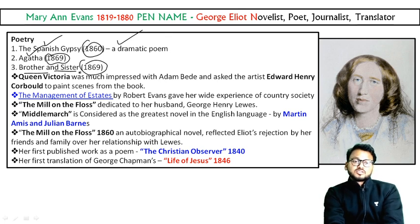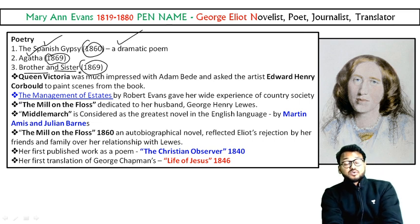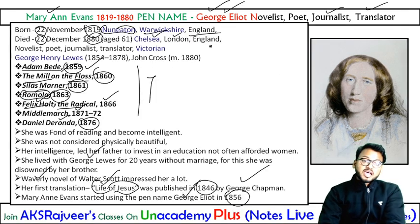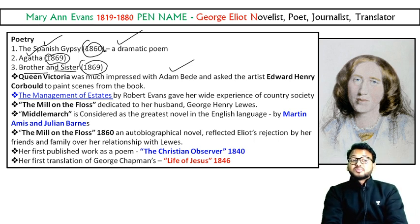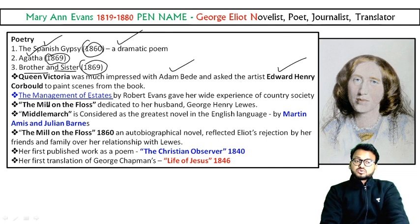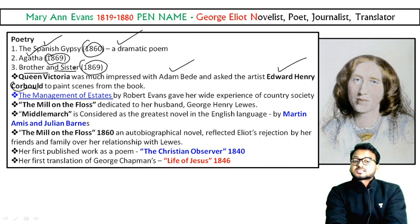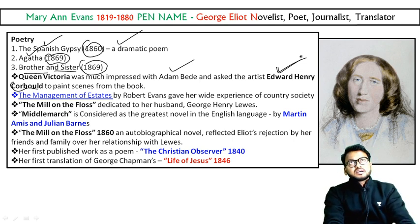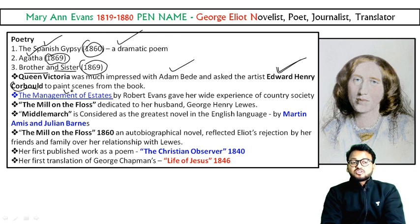George Eliot was such an impressive novelist that Queen Victoria was greatly impressed by her writing. After reading Adam Bede, which appeared in 1859, Queen Victoria was so impressed that she asked an artist named Edward Henry Corbould to create a few paintings based on her work. He then started making paintings inspired by her novels.